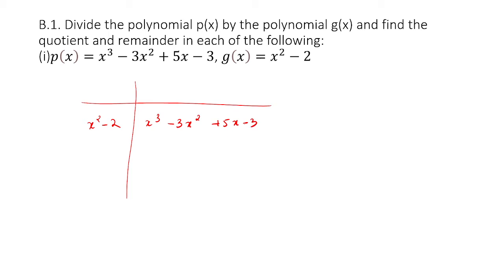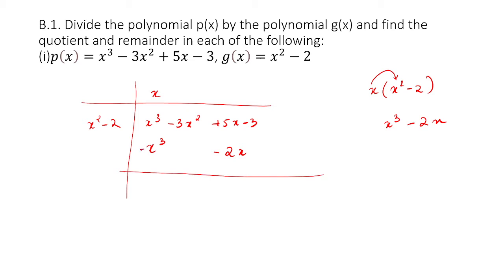This is something you've already done in class 9. What should you multiply x squared with to get x cubed? You must multiply x squared with x. So when you multiply x with x squared minus 2, x into x squared gives x cubed minus 2x. So x squared into x gives x cubed, and minus 2 into x gives minus 2x. The signs change, so this becomes 0. Bring down minus 3x squared, and 5x plus 2x becomes plus 7x. Bring down minus 3.